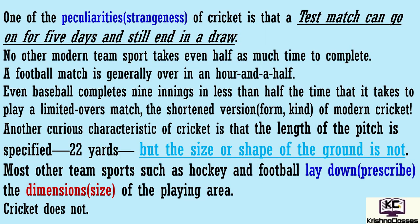One of the peculiarities of cricket is that a test match can go on for 5 days and still end in a draw. Cricket ki ek peculiarity — ek strangeness — ye hai ki ek test match 5 din chal sakta hai aur phir bhi draw mein samapt ho sakta hai. Draw ka matlab hai jab ye decide nahin ho paaye ki kaun si team jiti. No other modern team sport takes even half as much time to complete. Doosra koi bhi modern team sport cricket ke aadhe ke barabar bhi time nahin leta complete hone ke liye.